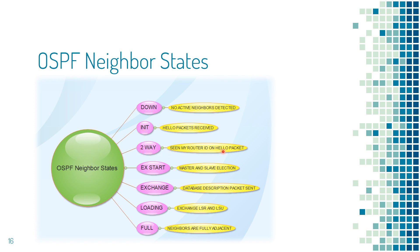In the Two-Way state, the router has seen its own router ID from its neighbor's hello, meaning bi-directional communication is established. In the ExStart state, the routers will decide who will be master and who will be the slave. The router with the highest router ID becomes the master. It will also determine the initial sequence number for the DBD packets — DBD stands for Database Description packets.